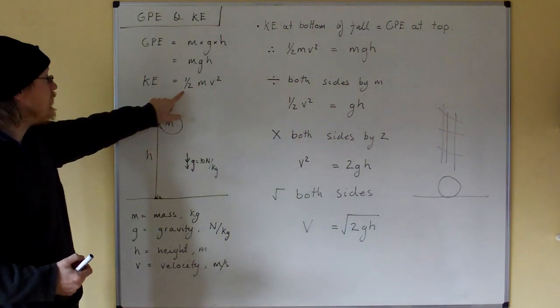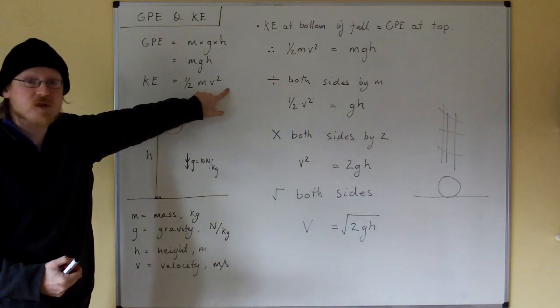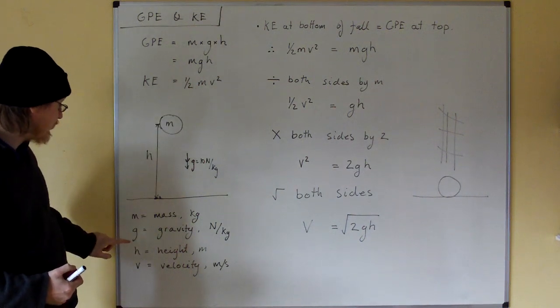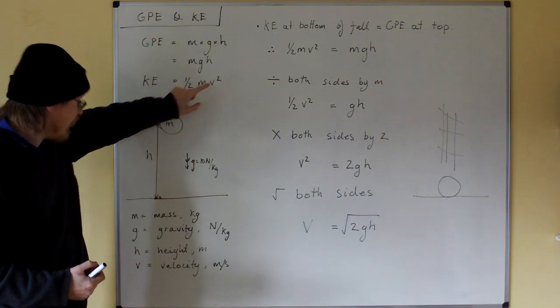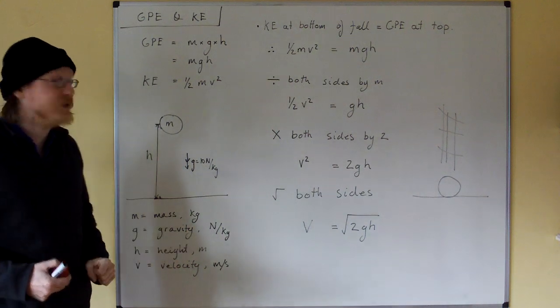Kinetic energy is equal to half mv squared, where half is a constant, m is the mass in kilograms, and v is the velocity in meters per second.